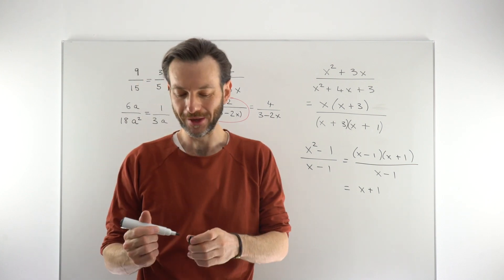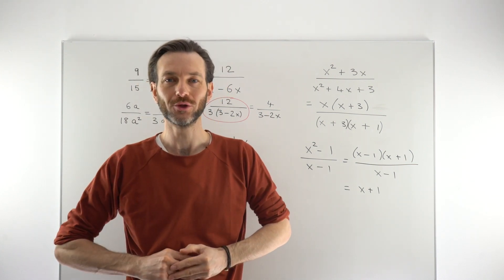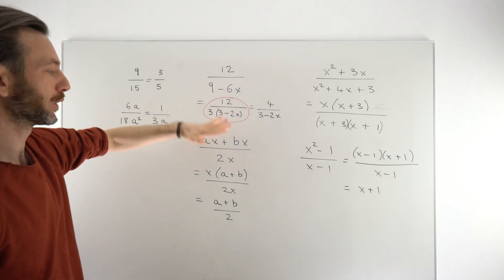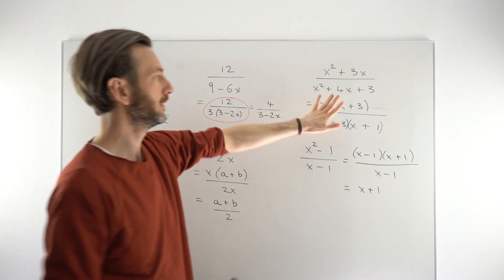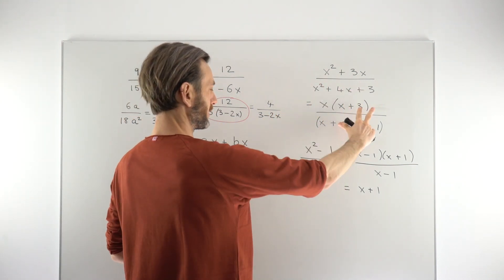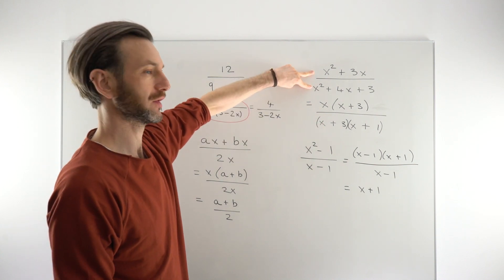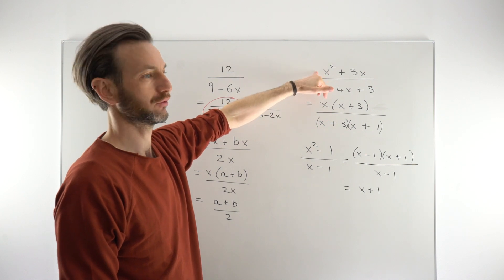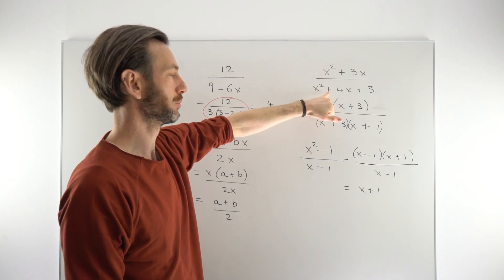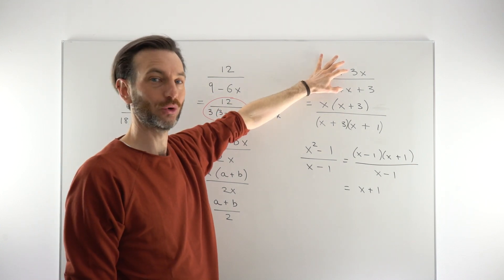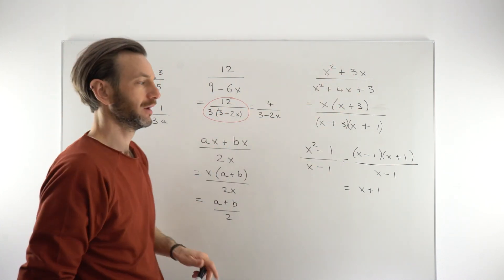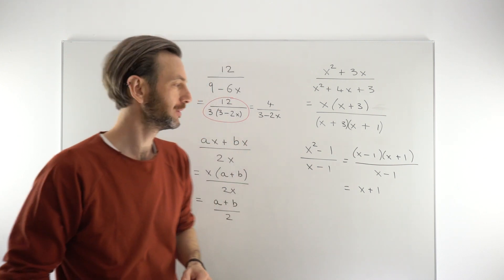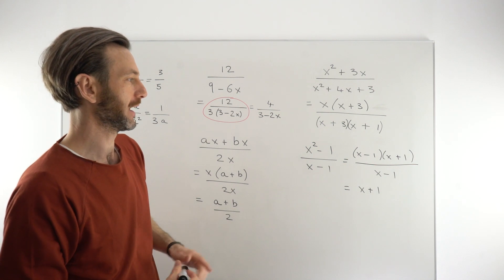That's basically how you simplify algebraic fractions — they're not terribly difficult. The absolute key is factorizing; that first line of working should always be a factorization. As the expressions get more difficult, the factorizing will get more difficult, but a trinomial and a binomial is probably your most common scenario. It's good to try a variety of these, because algebraic fractions are kind of everywhere and you're going to use them a lot in the future.